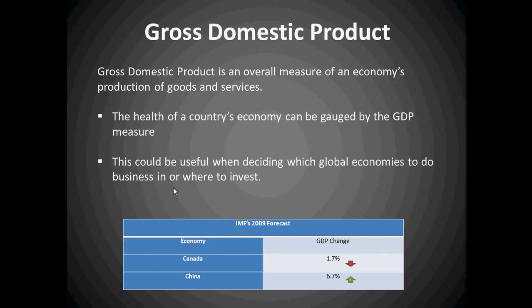The chart at the bottom displays a forecast produced by the IMF for Canada and China showing the changes. If you were going to decide whether to do business in China or Canada as a global company, you would want to choose China. China is growing at a much faster pace than Canada. Canada is actually declining in production, so China would be on a much better economic path.